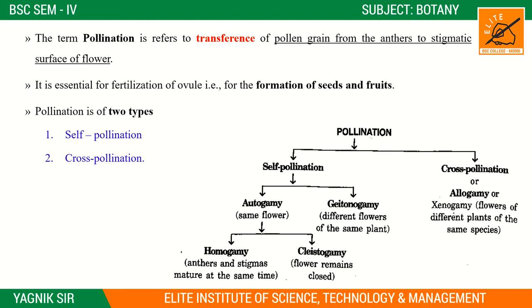Autogamy occurs in the same flower. Geitonogamy occurs in different flowers of the same plant — the plant is the same but the flowers are different, and that is when geitonogamy takes place.